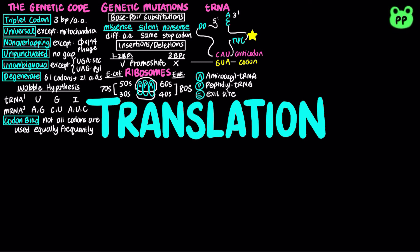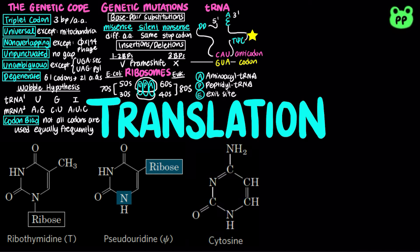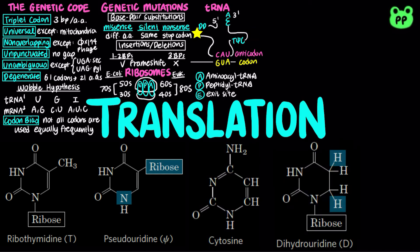The T arm contains three unique nucleotides: T stands for ribothymidine, Ψ stands for pseudouridine, and C stands for cytosine. The D arm contains two dihydrouridines. Both the D and T arms contribute to important interactions for the overall folding of tRNA molecules. The T arm also functions in interacting with the large subunit of ribosomal RNA.